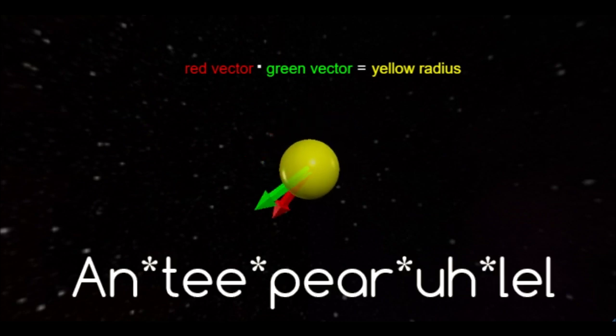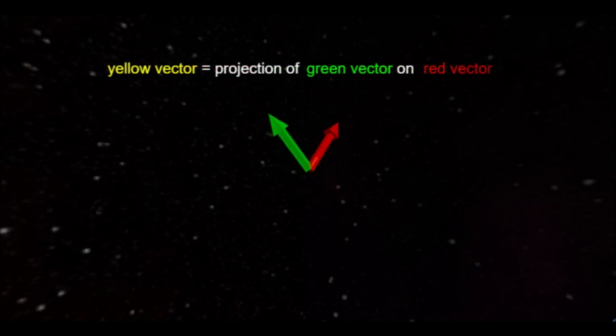By the way, anti-parallel is totally a word, and you should start using it. You can think of a dot product as showing you the projection of one vector onto another.